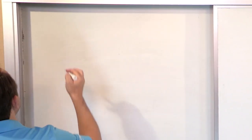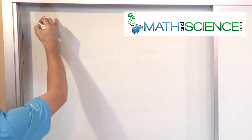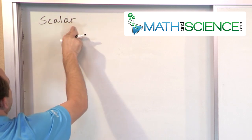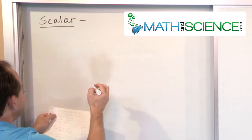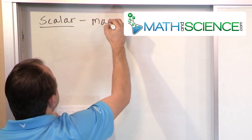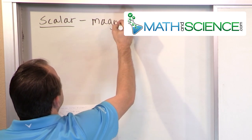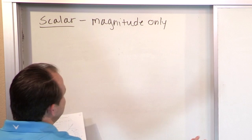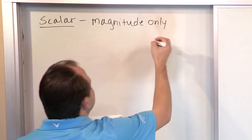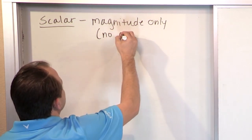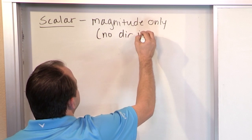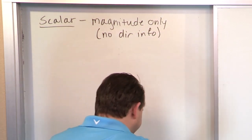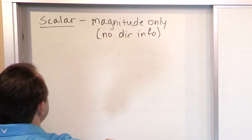Let's start writing some things down. A scalar — that's how you write that — it's magnitude only. What do I mean by magnitude only? It means there's no direction, no direction info. Once I start giving you some examples of scalars, you'll understand why that makes total sense.